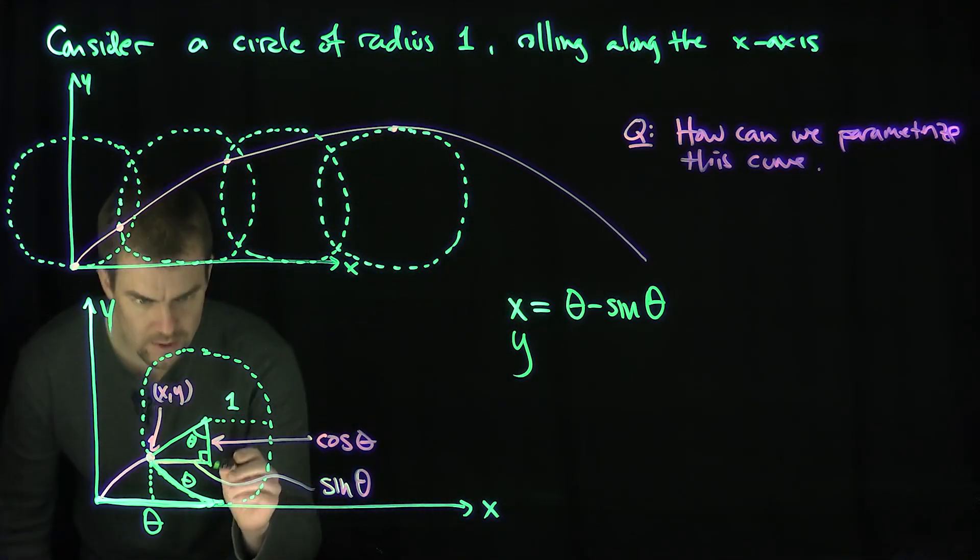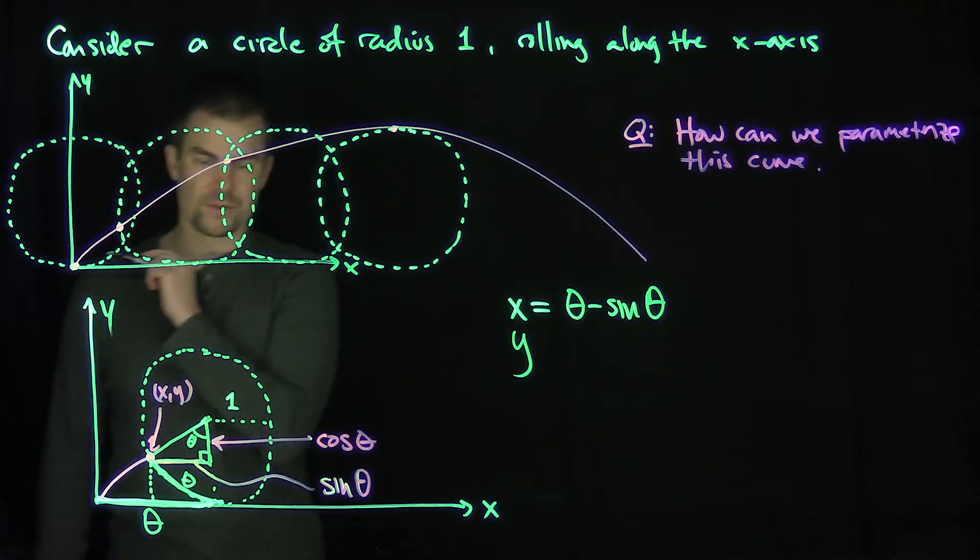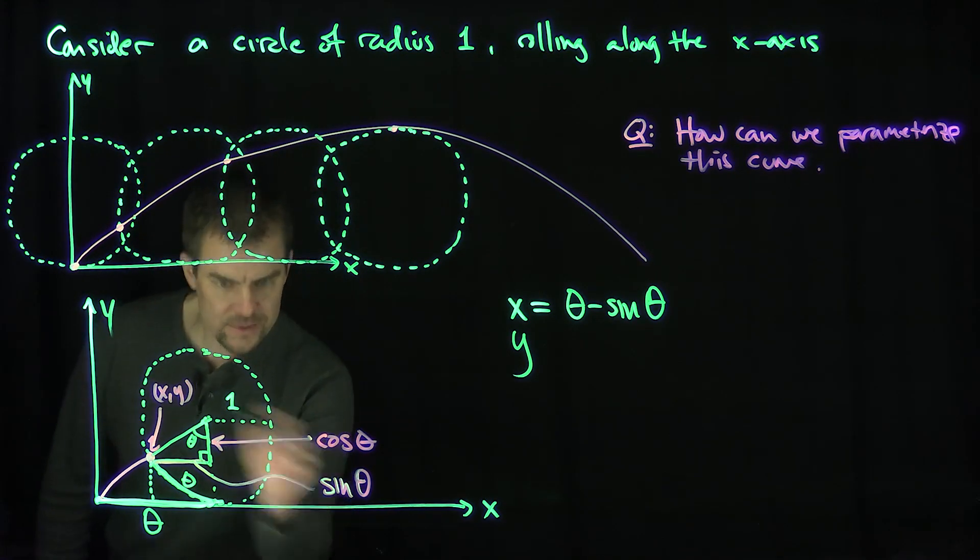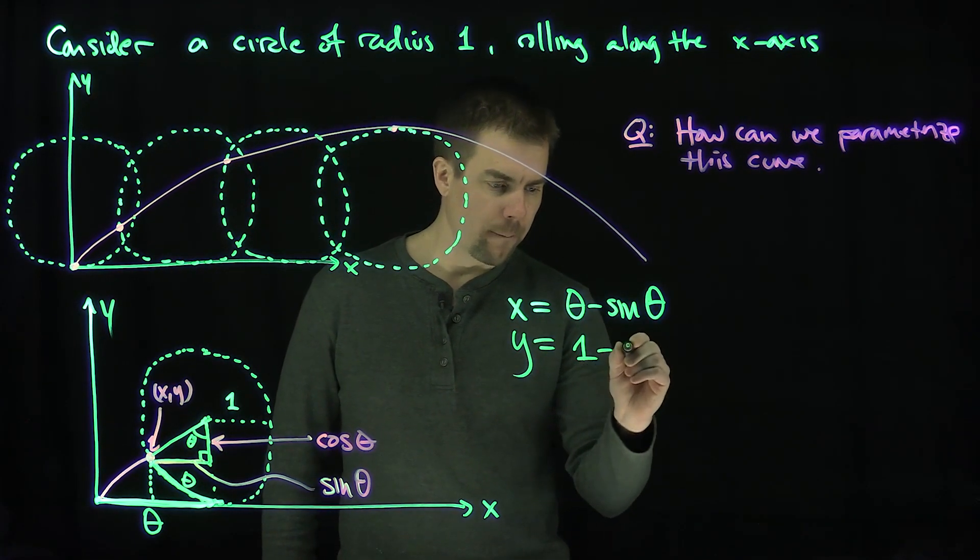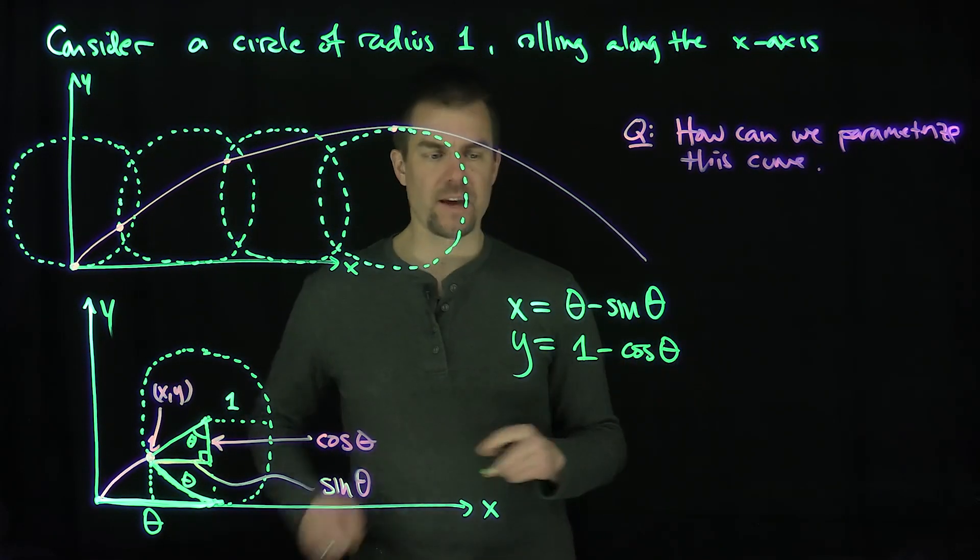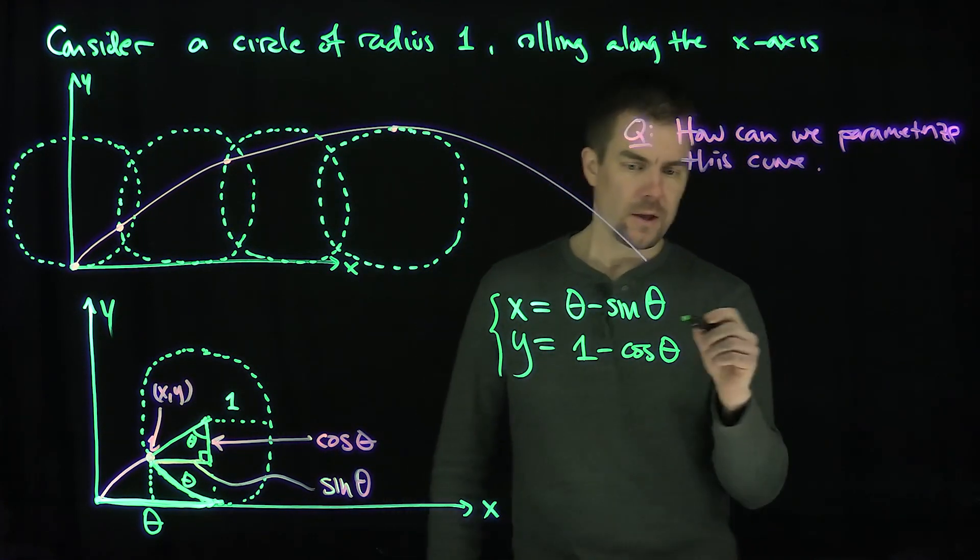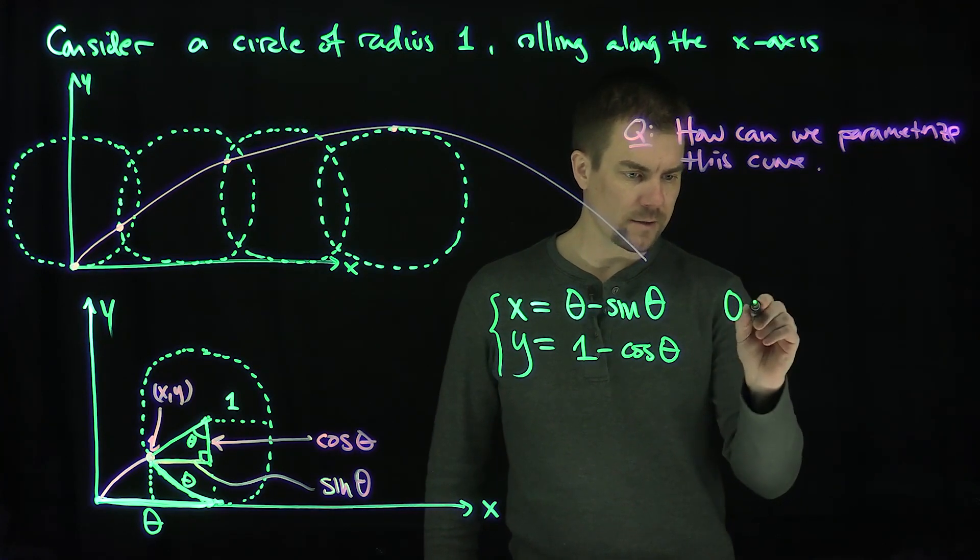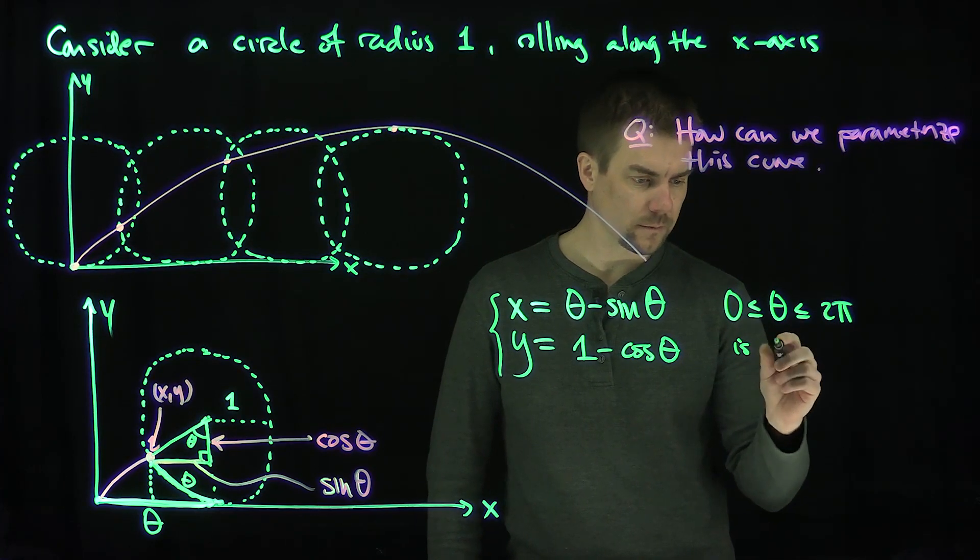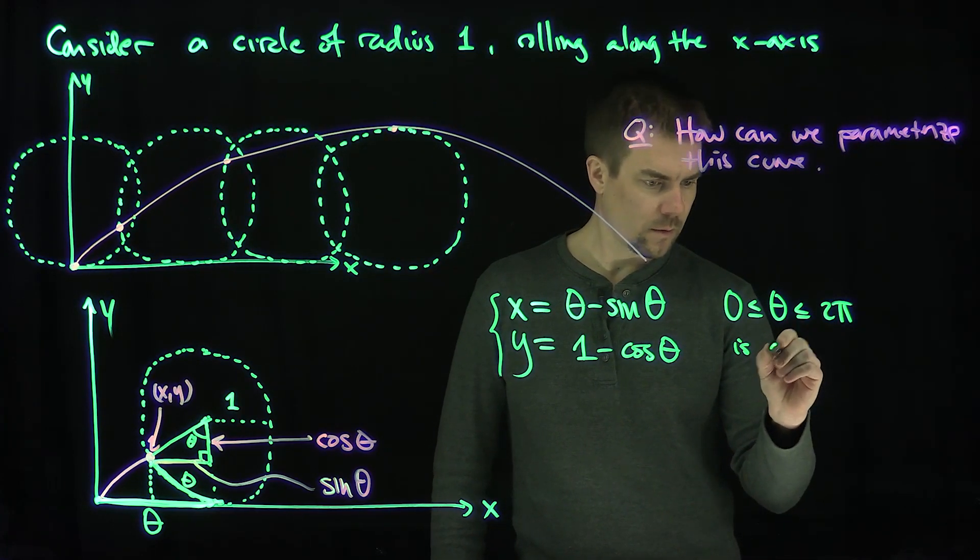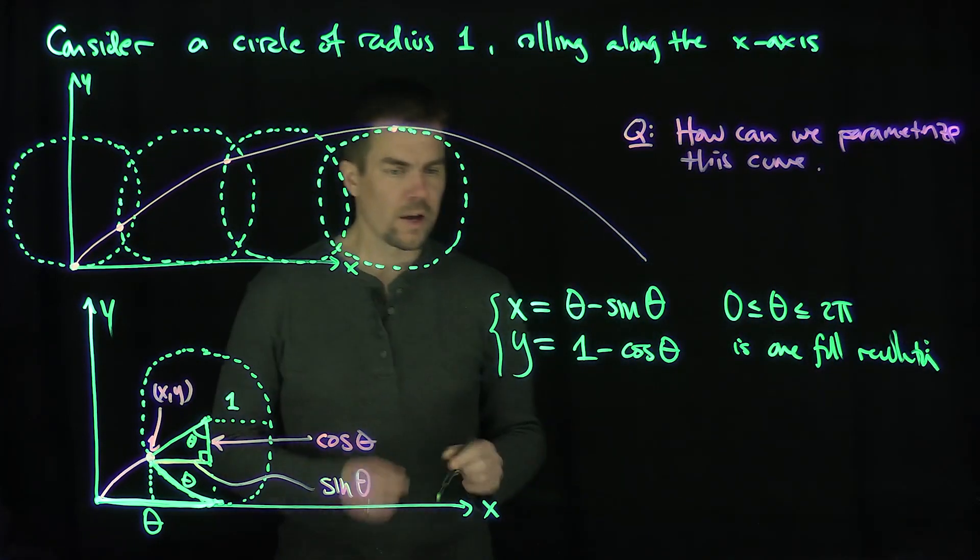And what will the y be? Well, what's the height of this thing over here? The height of this pink point is the total height of the radius of the circle, which is 1, minus that little height differential of the triangle, which is cosine theta. So my y will be 1 minus the cosine of theta. And so as theta goes between 0 and 2 pi, that will give me a full revolution of this cycloid. So for theta between 0 and 2 pi, 0 less than theta less than 2 pi is one full revolution, is one revolution of the cycloid.